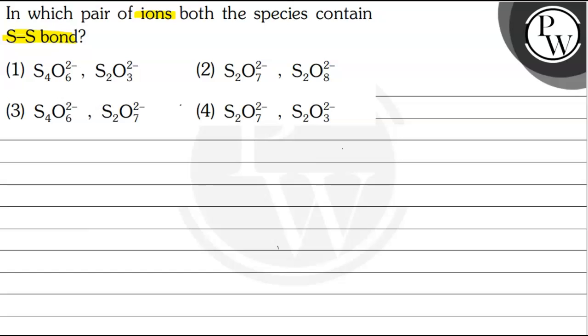Basically, sulfur-sulfur single bond. In all options, which option has two species with sulfur single bond present? For that, there are two compounds which form S single bond S.